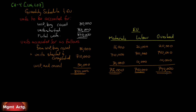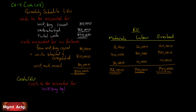Number 2: determine the cost per equivalent unit — that's the second part of the production schedule, costs to be accounted for. Work in process beginning balance had costs incurred last period, so for FIFO we don't include it in our cost per equivalent unit calculation. The costs for materials, labor, and overhead give a beginning balance total of $146,600. Under FIFO, for the cost per equivalent unit we're concerned only with costs added this period.